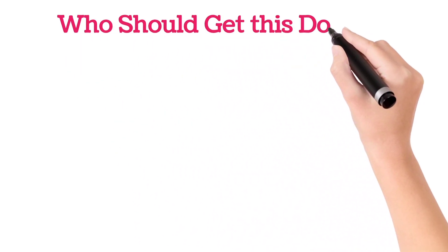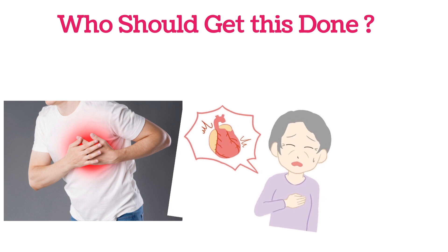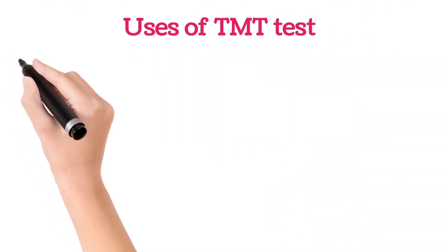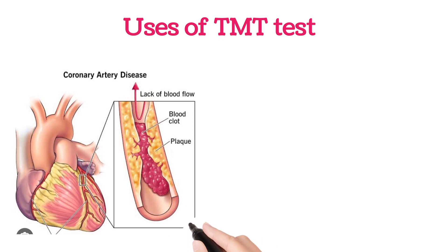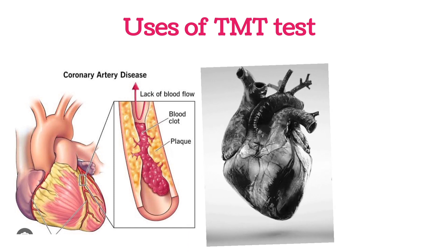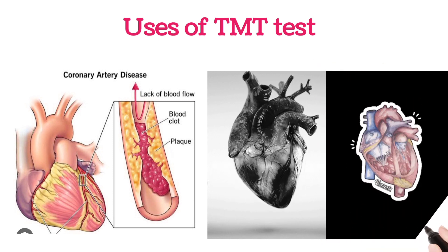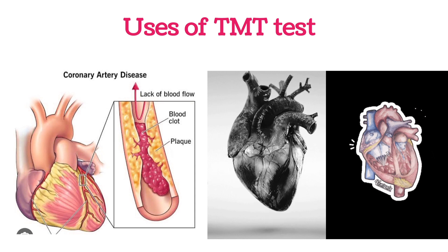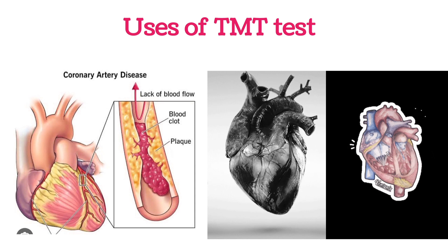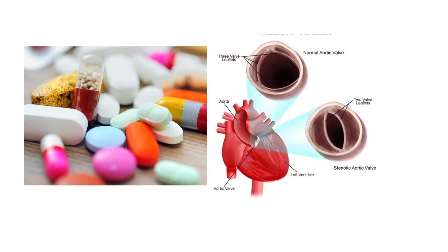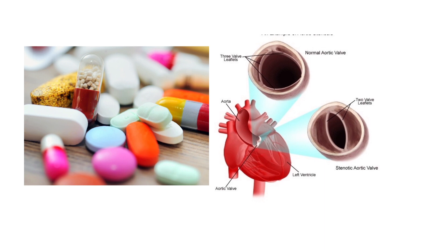We can examine blood circulation in the heart by the TMT test. Who should get this test done? People who have symptoms of chest pain, people with history of heart attack, or history of bypass surgery — this test is generally advised. With the help of TMT test we can see any blockages in the blood vessels, coronary artery disease, how the heart rhythm is, how the heartbeat is, and also to evaluate the prognosis after myocardial infarction, after angioplasty or bypass surgery, and to evaluate the effectiveness of medicines and the working of heart valves.